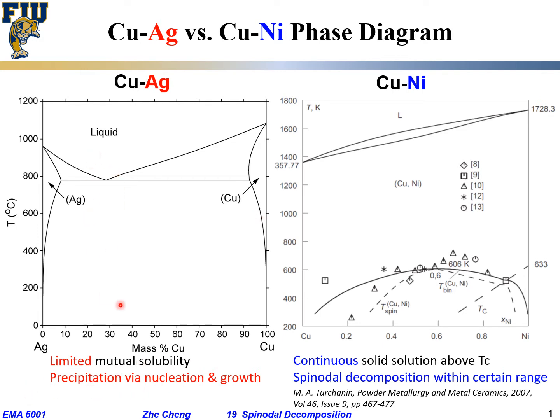For these systems, when we go from one phase — single alpha — into alpha plus beta, the precipitation typically occurs via what we have discussed before: nucleation and growth process. Nucleation means you form a local cluster which is very different in its composition as well as structure, or at least the lattice parameter, from the matrix. There is a distinct interface in the process even from the beginning. And then after that is growth of that precipitate.